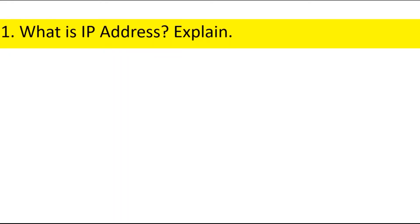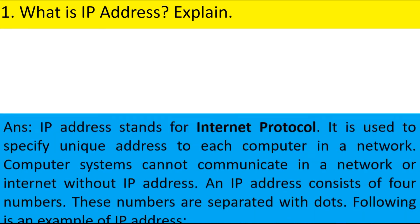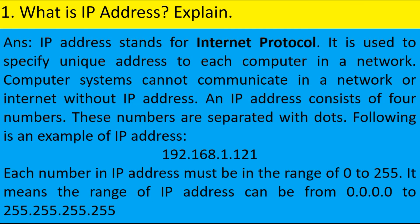Long answer type questions. What is IP address? Explain. IP address stands for Internet Protocol. It is used to specify a unique address to each computer in a network. Computer systems cannot communicate in a network or on the internet without an IP address. An IP address consists of four numbers separated by dots. For example: 192.168.1.121. Each number in an IP address must be in the range of 0 to 255, so the range can be from 0.0.0.0 to 255.255.255.255.